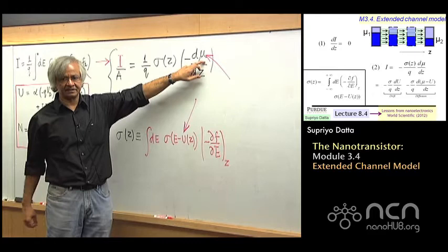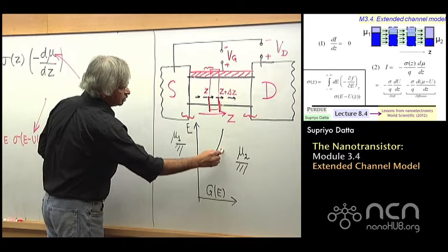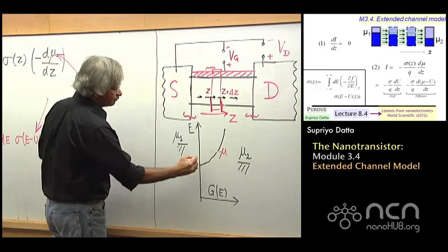On the other hand, mu is an approximate concept which describes roughly up to what level the states are filled. So if you talk about a mu inside a device, it gives you a feeling for up to what level it's filled. Whereas what U does is it just moves this whole thing up and down.